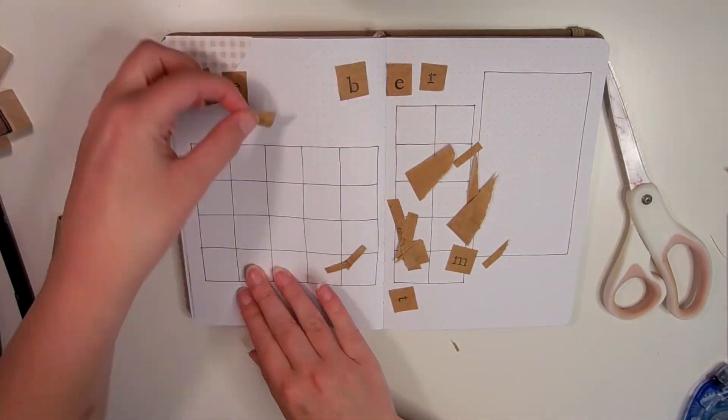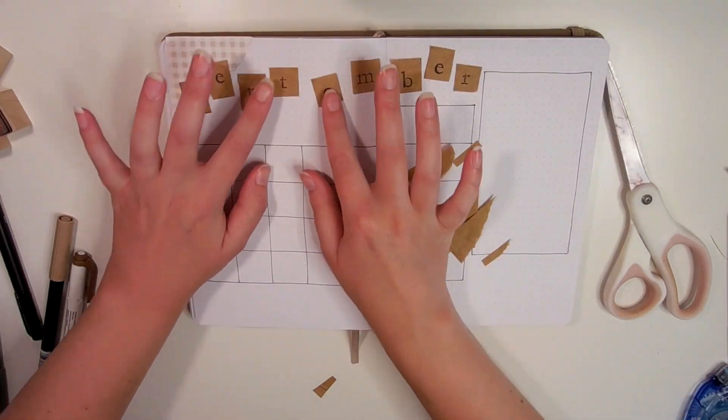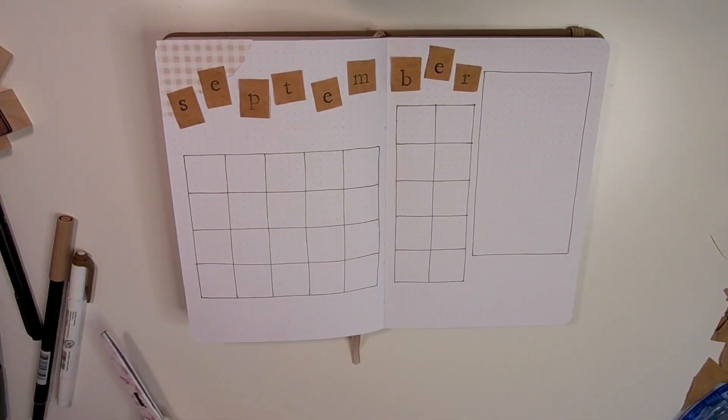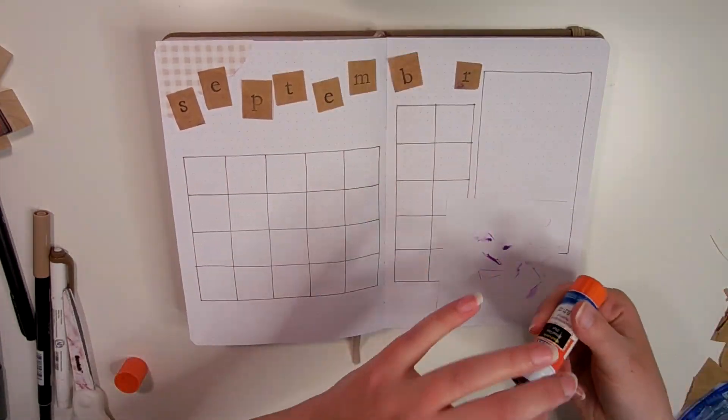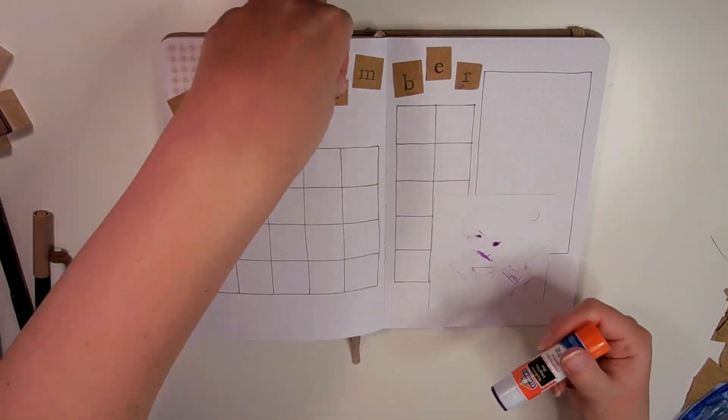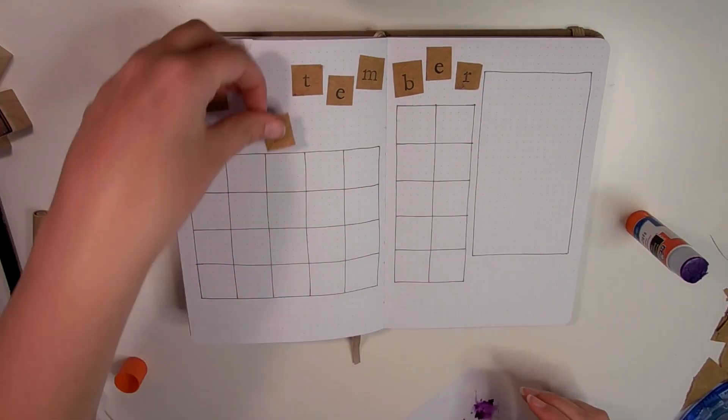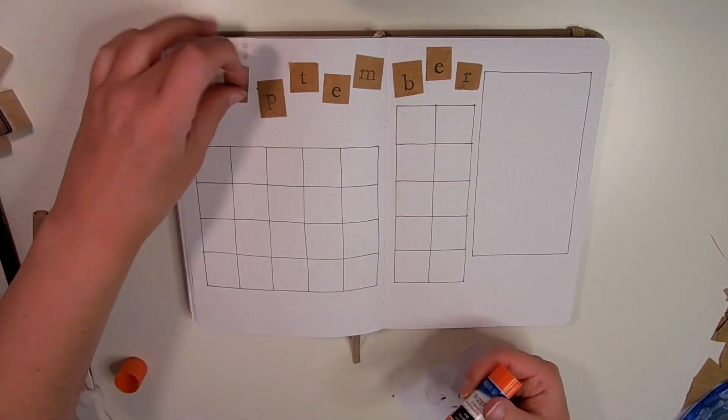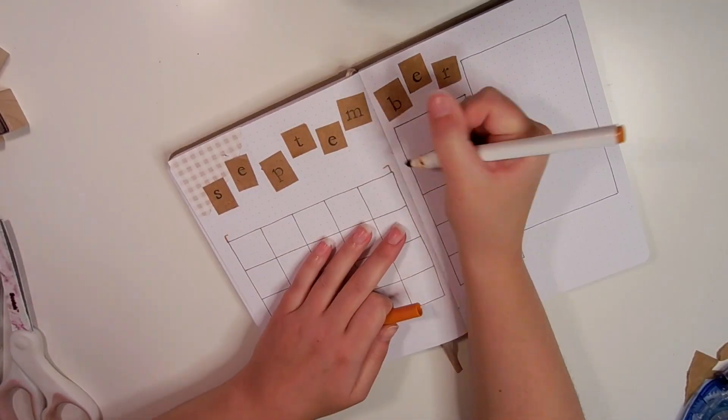Moving on to the calendar spread. For the actual calendar I just set up some simple black boxes for every day of the month, and then I have that bigger box on the side where I'm going to write down any important dates or things I need to remember. For the title I wrote out September using the stamps, but cut out each individual letter so I was able to place them in this scattered look.